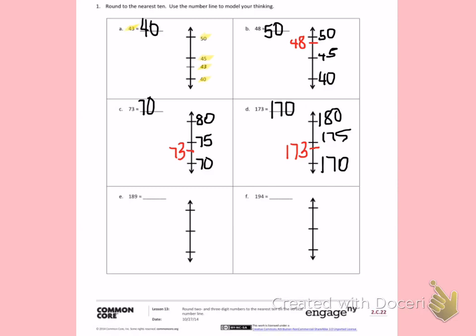Letter E. I have 189. I want to think about what 10s 189 fits between. 189 fits between 180 and 190. My halfway number is 185. I will put 189 about here on the number line. 189 has passed the halfway number and it's almost to the very top of the number line. So I am going to say 189 is about 190.